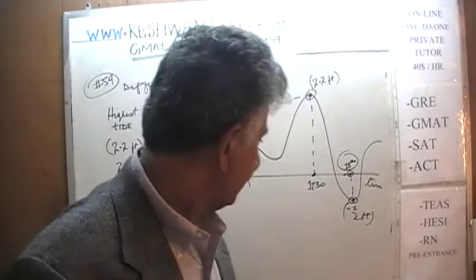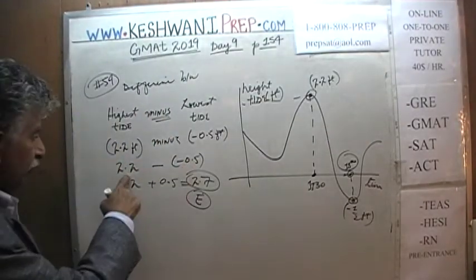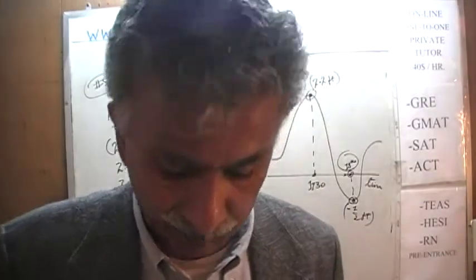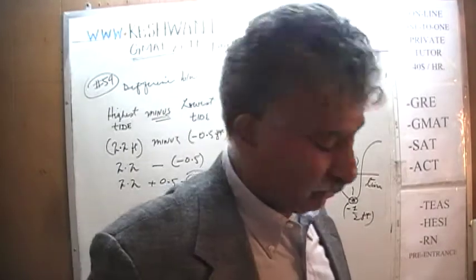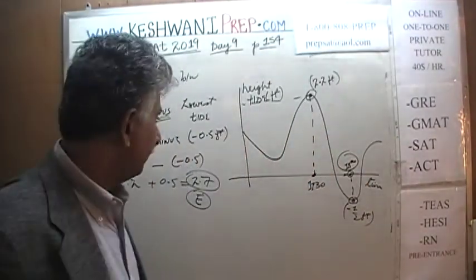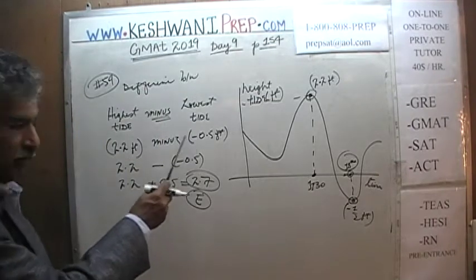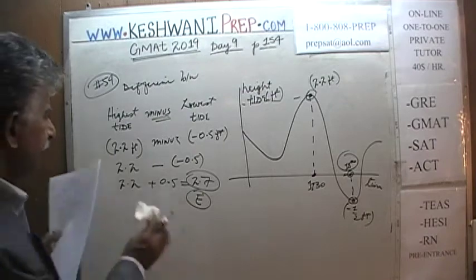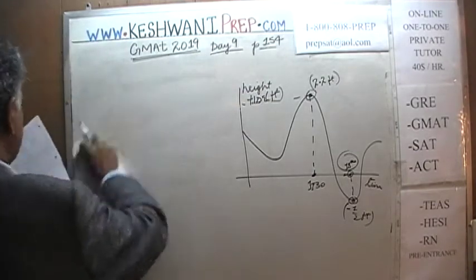Do not end up subtracting 2.5 from 2.7 — you would get the wrong answer, which would be choice A. The correct answer is E. That is all they want to see here: that you can pay attention and recognize that minus a negative quantity becomes positive. No need to make a fuss about it.